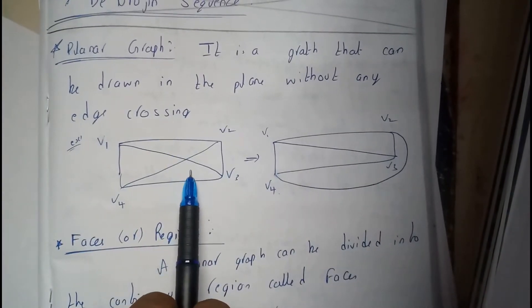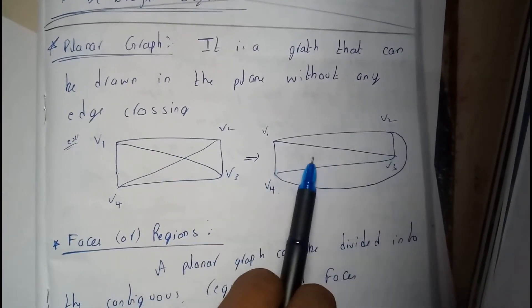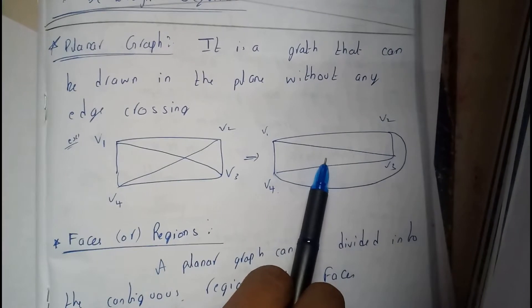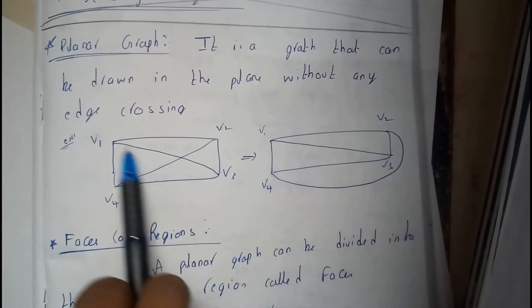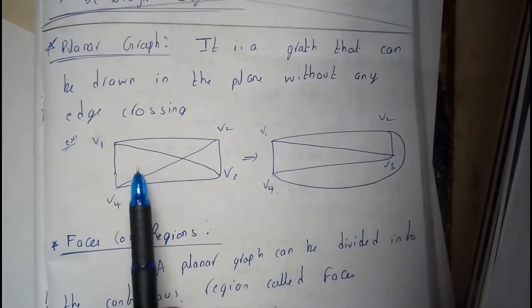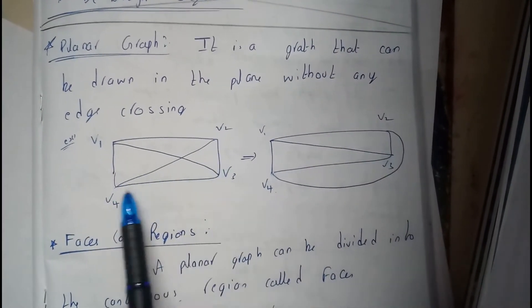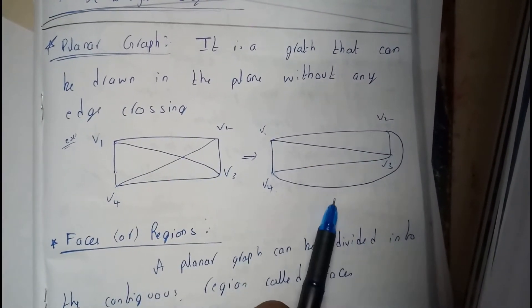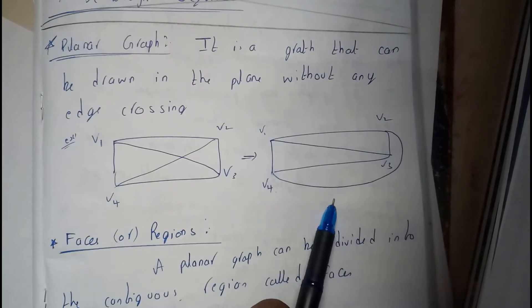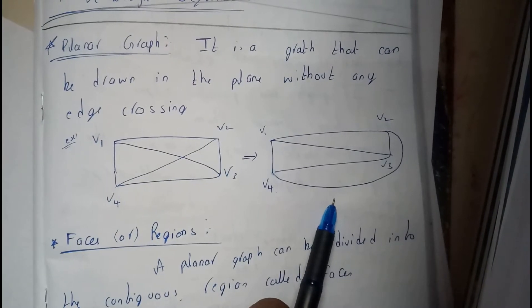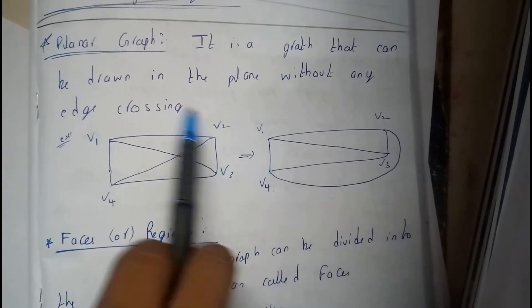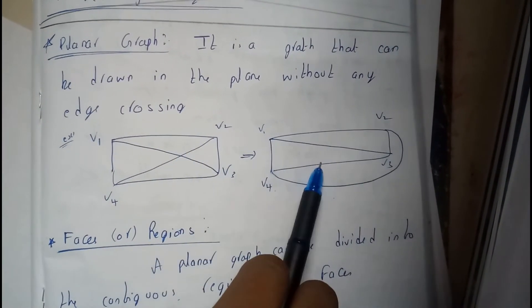So here there are crossing edges. But we can draw this in turn like this, just by extending this outside. Hence we will not be finding any crossed edges. Hence, this is a planar graph.